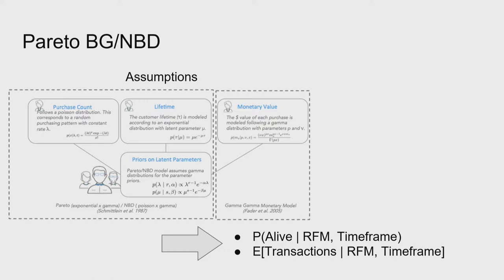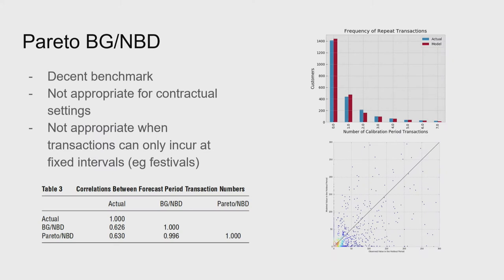From this we can get the probability of a user being alive and the expected number of transactions they will make within a holdout period. We can add the monetary value information to that and come up with LTV estimates. The authors applied their algorithm on a dataset from now-defunct CDNow and got pretty good distribution estimates. However, when they plotted a scatter plot of predicted versus actual values, the picture is more sobering — we massively over-predict some low-value users and massively under-predict some high-value users. This is quite problematic given that high-value users generate the bulk of revenue on most websites. However, they predict better than random since their correlations are actually quite good.